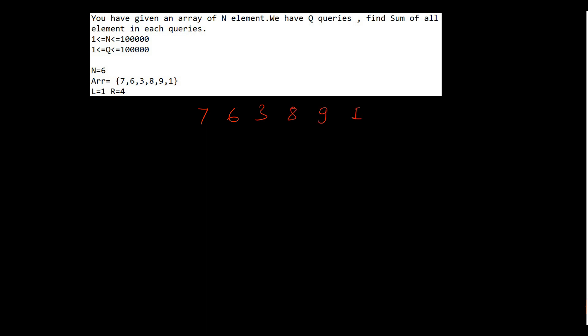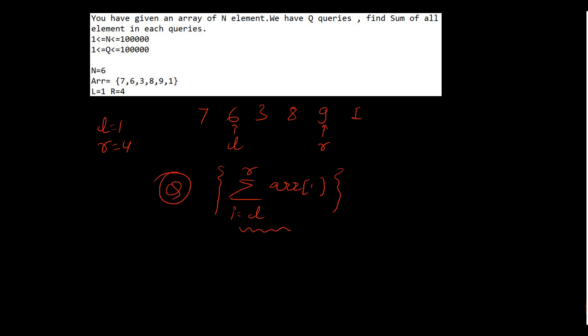Let's revisit the example. Our array is 7, 6, 3, 8, 9, and 1. Suppose l equal to 1 and r equal to 4, meaning l is pointing to 6 and r is pointing to 9. We have to calculate the sum of elements 6, 3, 8, and 9. Can we write this as: sum of all elements from 0 to r, minus sum of all elements from 0 to l-1? In the previous approach we handled each query in O(n), but with this approach we can handle each query in O(1), making the overall time complexity O(q).